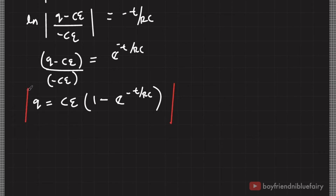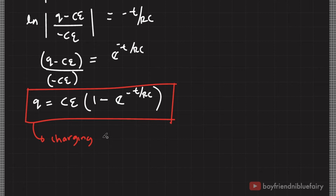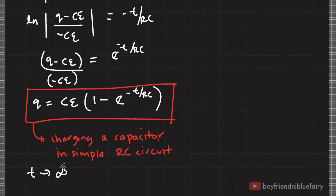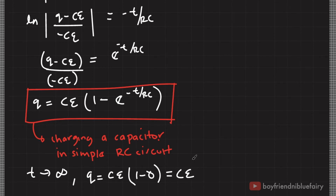We now have the following equation. Notice that as time approaches infinity, Q equals capacitance times EMF voltage, giving 1 minus 0, which equals CE. So it seems that the value CE is the final value of charge of the capacitor.